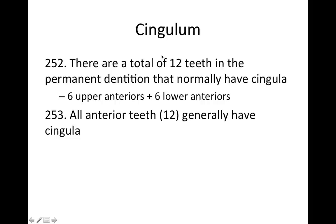Moving on to cingulum. There are a total of 12 teeth in the permanent dentition that normally have cingula — that includes the six upper anteriors and the six lower anteriors. All anterior teeth generally have a cingulum.